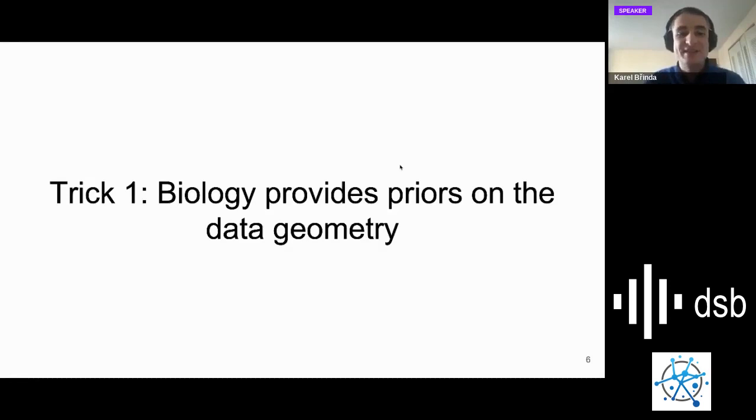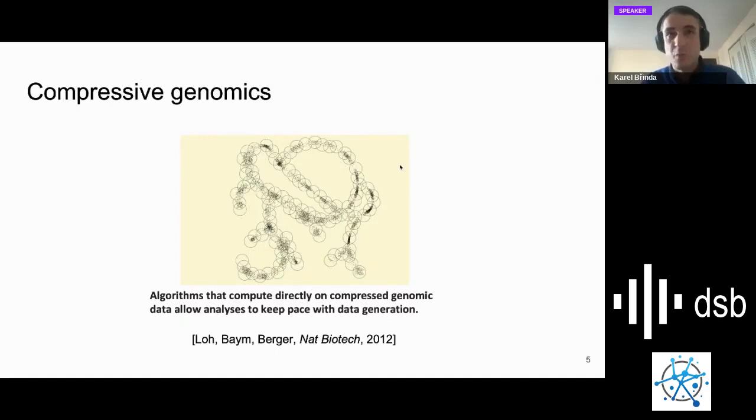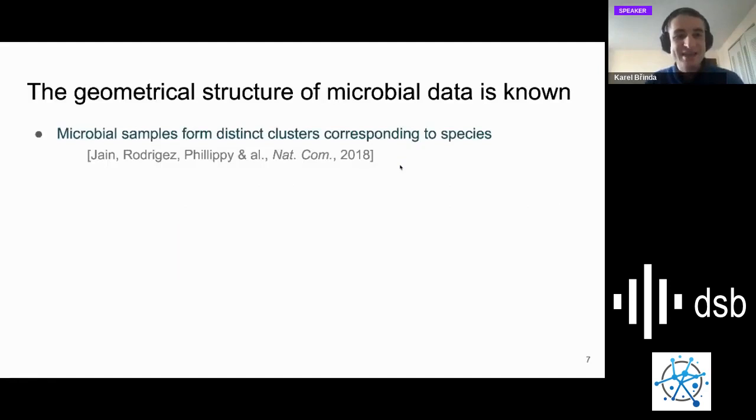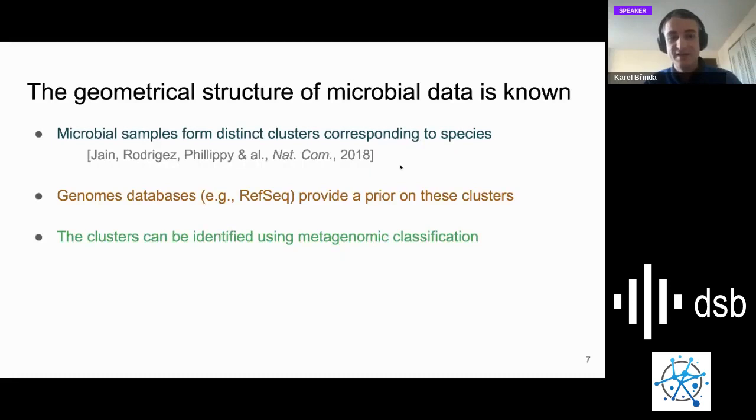The first trick we use is that biology provides us pretty good priors on the data geometry. In the case of microbial species, as known from the literature, microbial samples form distinct clusters corresponding to individual species. This has been shown recently in Nature Communications. We have amazing genome databases like RefSeq for instance, and these databases provide a good prior on these clusters. The clusters can be identified using metagenomic classification using methods which already exist, and the obtained clusters can be used for parallelized compression and indexing.